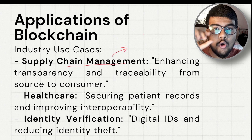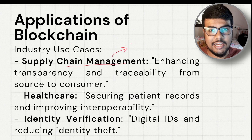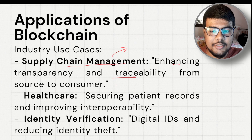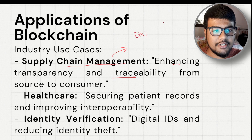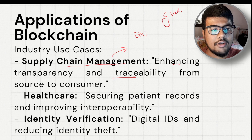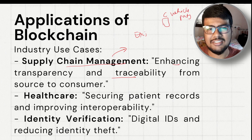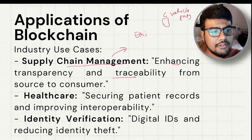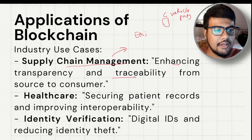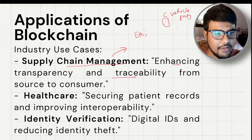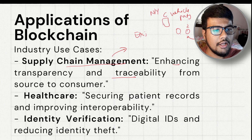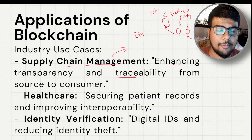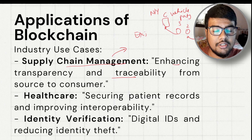Supply chain management is a core application for any business. Blockchain enhances transparency and traceability from source to consumer. As an example: a company dealing in vehicle parts might supply a large machine to India. There are many intermediaries — the machine transfers to party one, then party two, then party three ships it to New York. Blockchain makes the entire chain transparent.